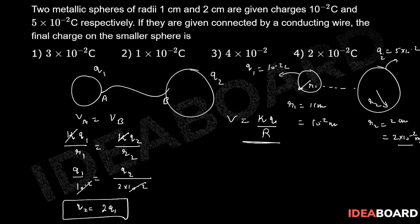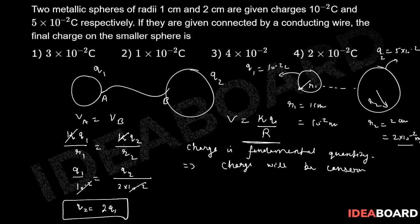Now in order to solve this equation we need another condition. One thing we know is that charge is a fundamental quantity, which shows that charge will be conserved. If charge will be conserved, that means q1 plus q2, these are the final charges, q final will be q initial, and what is the initial charge?